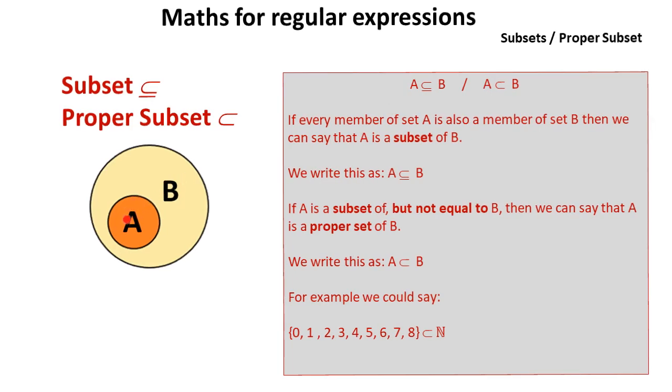If every member of set A is also a member of set B, as we can see by this diagram, then we can say that A is a subset of B, and we write that using this notation here.